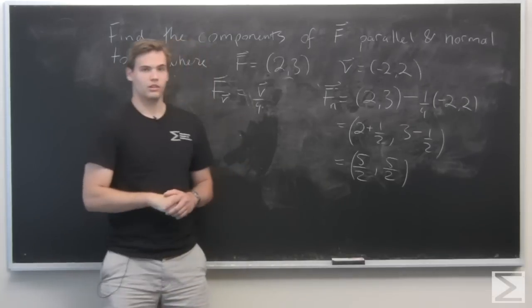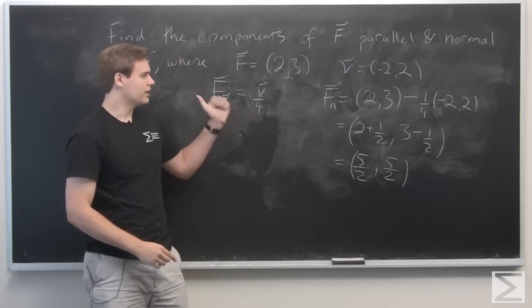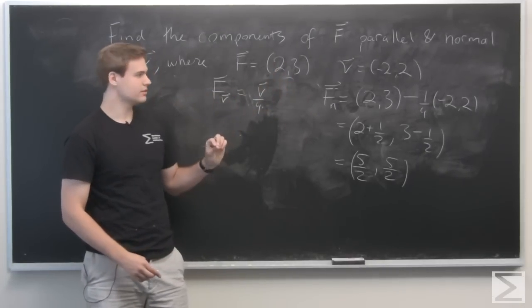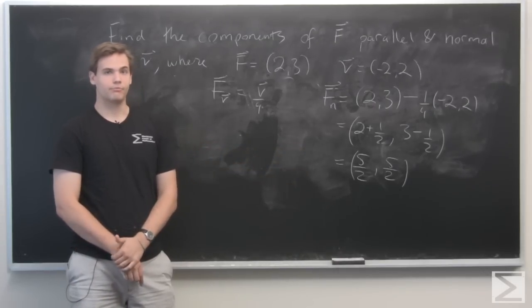So the component of f parallel to v is 1/4 times v, and the component of f normal to v is (5/2, 5/2). And that's it.